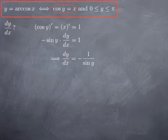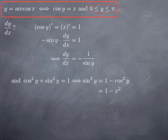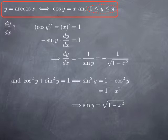We want to express this in terms of x. Using the identity cosine²(y) + sine²(y) = 1, we get sine²(y) = 1 − cosine²(y). Since cosine(y) = x, that's 1 − x². So dy/dx equals negative one over sine(y), where sine²(y) = 1 − x². Additionally, y is between zero and pi, so sine(y) is positive. Therefore, sine(y) equals the positive square root of (1 − x²), and replacing in the formula, we obtain that dy/dx equals negative one over the square root of (1 − x²).